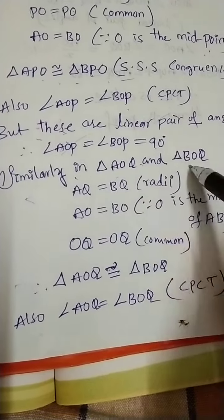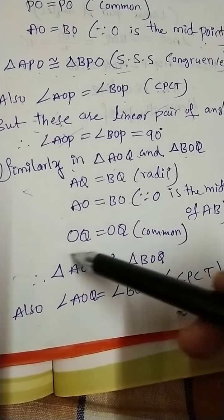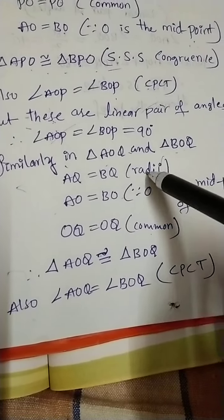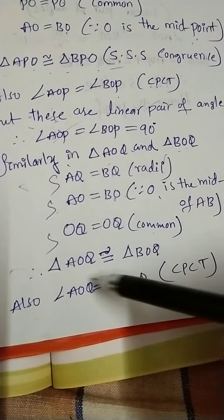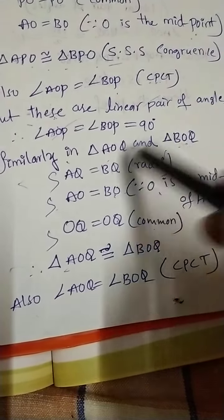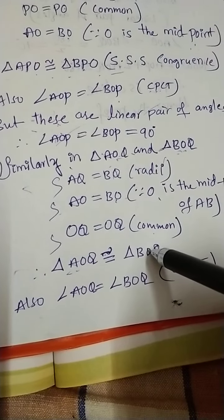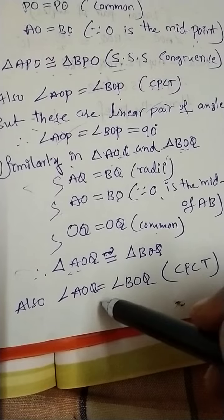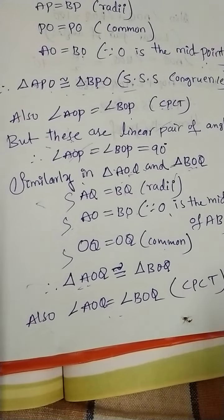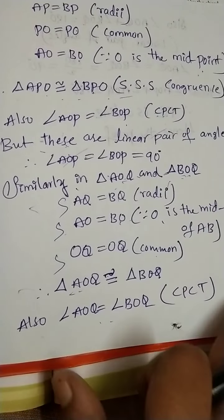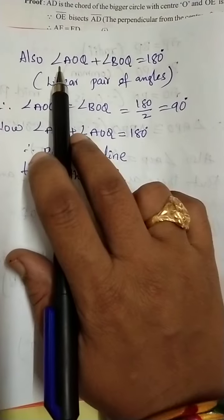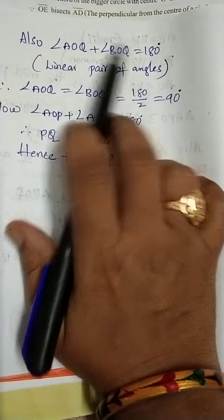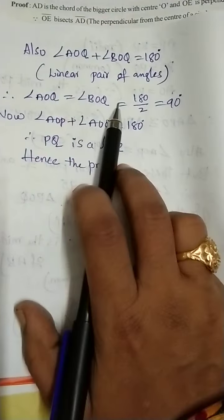Now, as I explained in the figure — AQ equals BQ (radius), OQ equals OQ (common side), AO equals BO (midpoint) — so by SSS congruency these two triangles are congruent. Also, angle AOQ equals angle BOQ by the CPCT rule. Since they form a linear pair, each angle is 90 degrees.